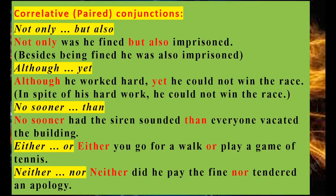Now correlative conjunctions, sometimes called correlatives, are paired conjunctions. Like 'not only, but also.' Not only was he fined, but also imprisoned. Transformation: not only he was fined, but also he was imprisoned. You can also say: besides being fined, he was also imprisoned. That is transformation of sentences.